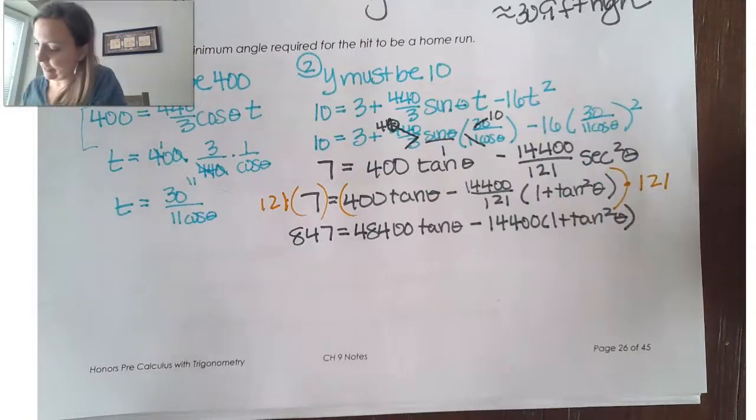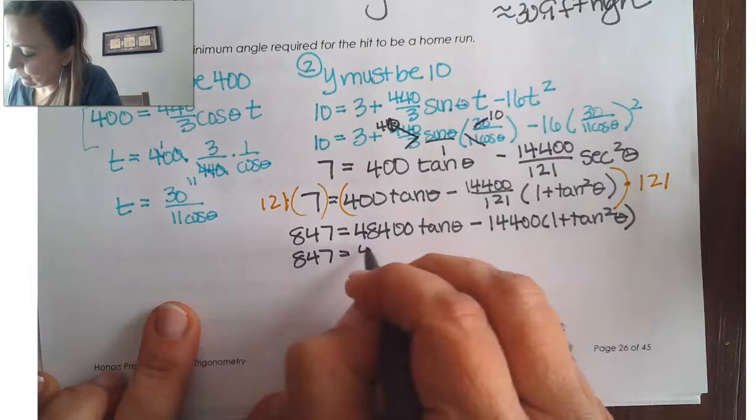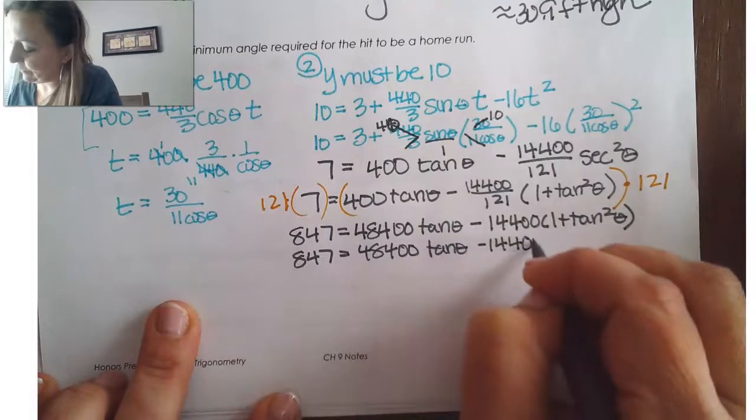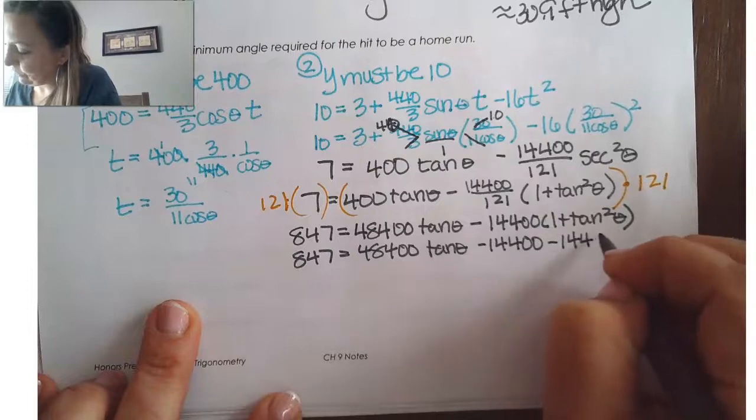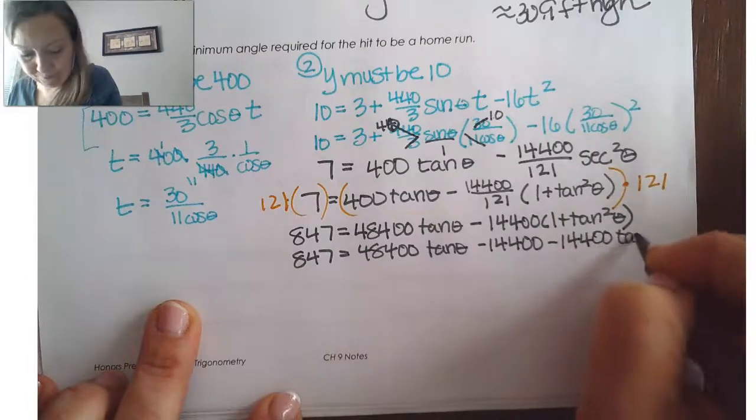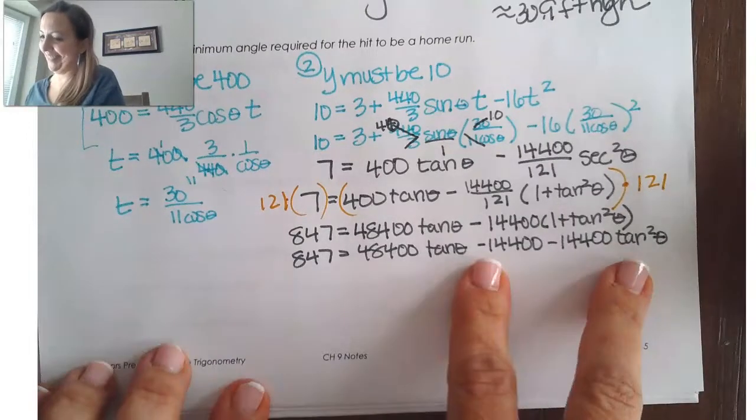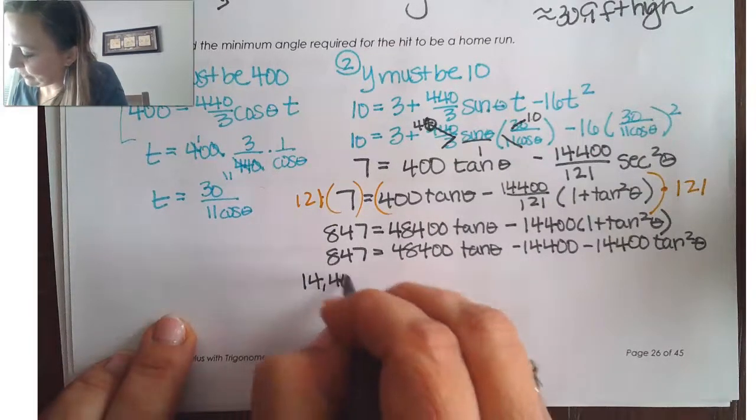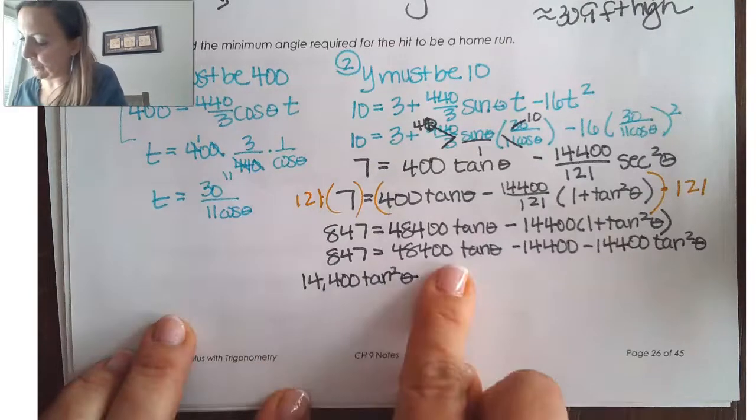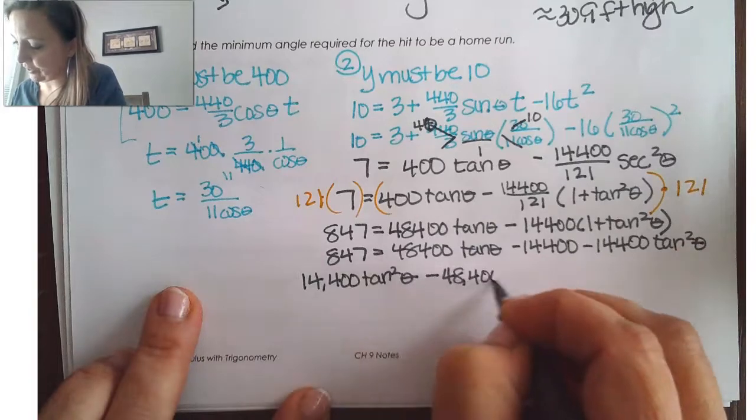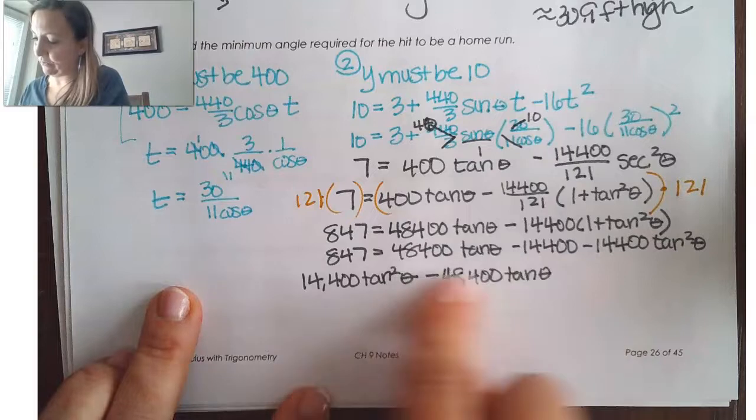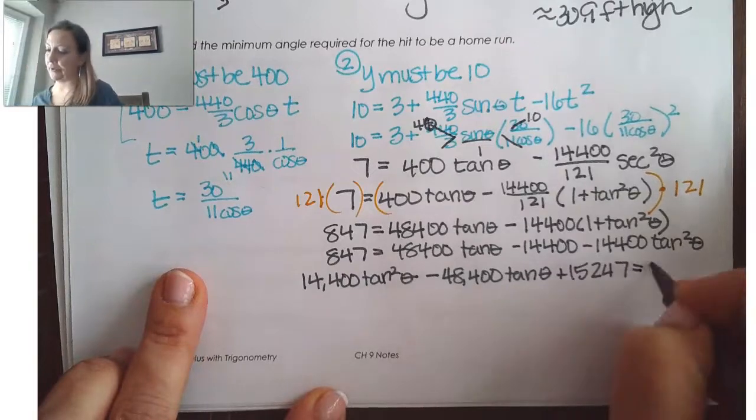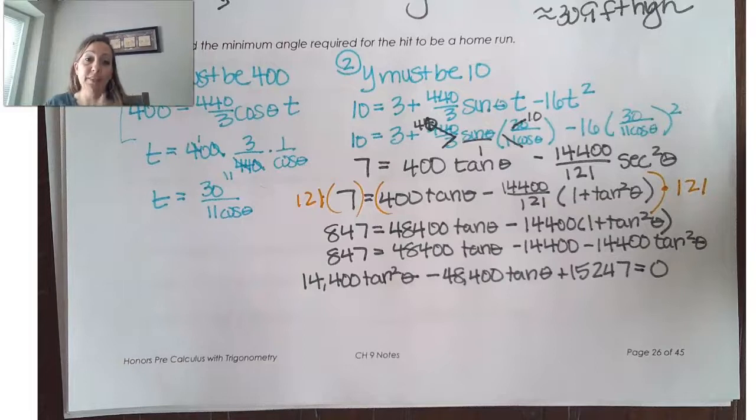So, 121 times 7 gives me 847. 121 times 400 will give me 48,400. And then, here, those cancel. And that's just going to make it a little easier for me to distribute, just to get rid of that fraction from there. So, now I've got 847 and then 48,400 tan theta distributing this. So, minus 14,400 and then 14,400 tan square theta. So, if I wrote this in standard form, I'm going to bring this over. So, this is going to be positive 14,400 tan square theta. This is going to move over and be minus 48,400 tan of theta. And then, I would need to add 14,400 to 847 to give me 15,247 equals 0.